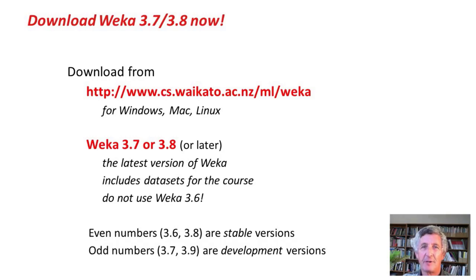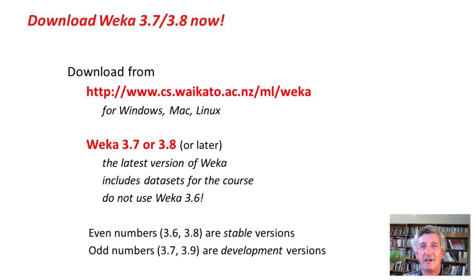You should now download WEKA 3.7 or 3.8. Odd-numbered distributions like 3.7 are development distributions, which are then released as stable even-numbered versions. So WEKA 3.7 will be released as WEKA 3.8. Download the latest version from the WEKA website for Windows, Mac, or Linux. You must use WEKA 3.7 or 3.8 for this course — you cannot use WEKA 3.6, because it doesn't have the package system.